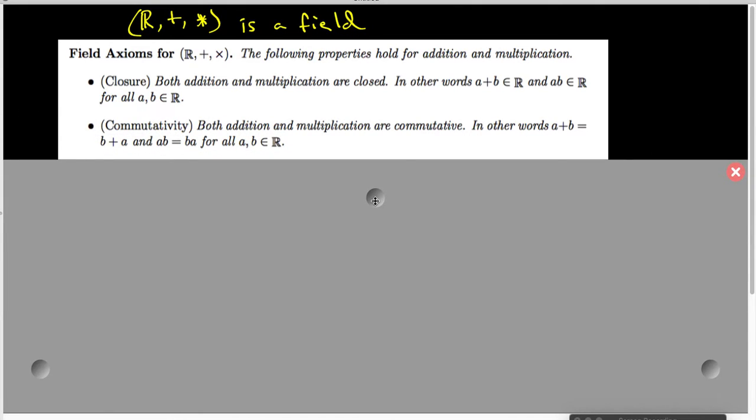The two operations are also commutative, which means it doesn't matter which way we order the two elements. If I look at A plus B and I look at B plus A, those are the same real number. If I look at A times B and B times A, those are the same real number.